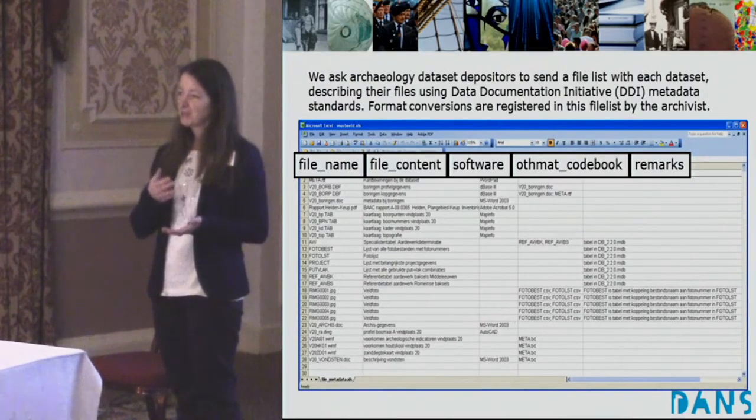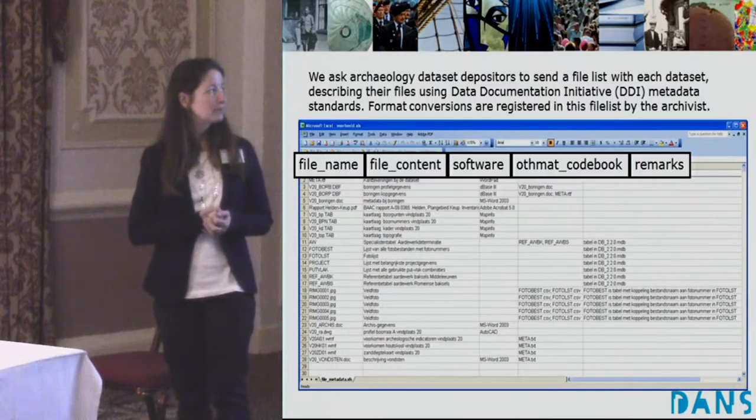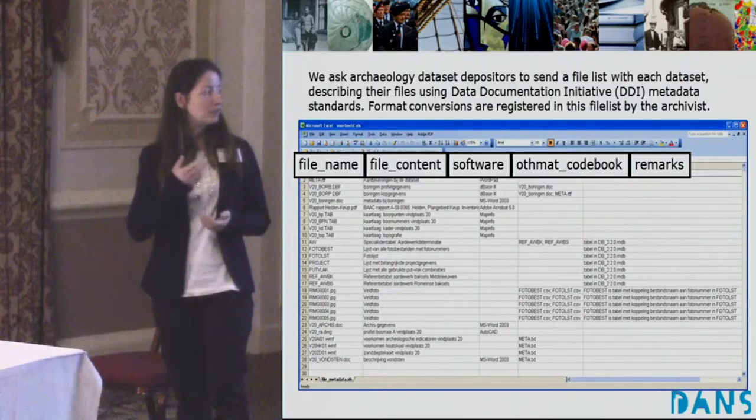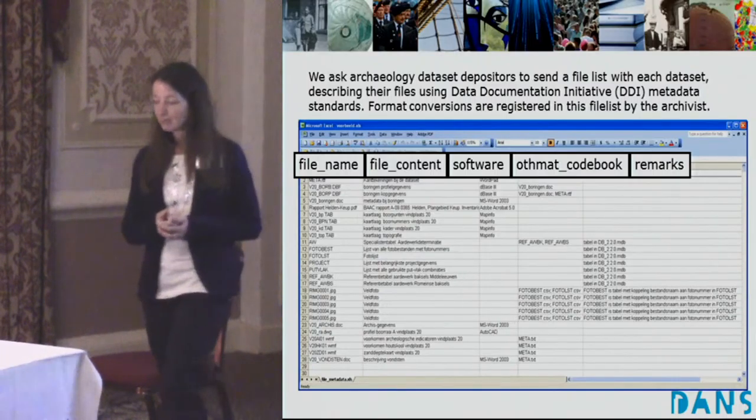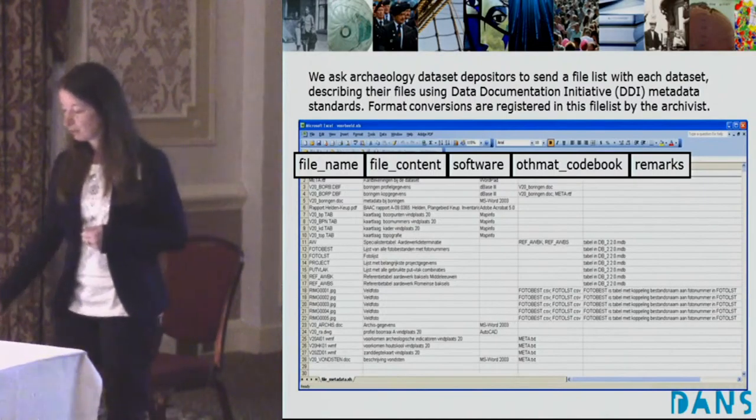What kind of pictures are shown? What can be seen in the pictures? File lists — this is an example of that process.